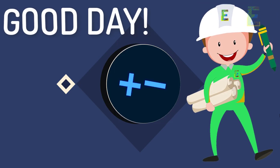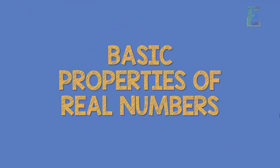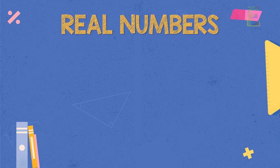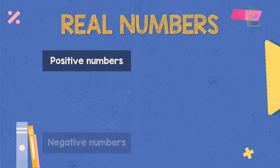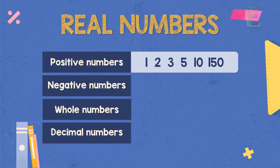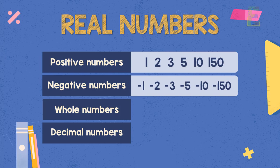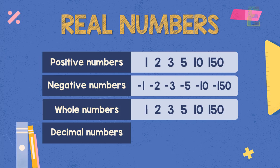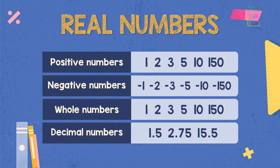Good day learners, this is EarthPen. For today's topic, we are going to talk about the basic properties of real numbers. In mathematics, real numbers are the type of numbers we normally use — positive or negative numbers, whole numbers, or decimal numbers. Examples of positive numbers are 1, 2, 3, 5, 10, 150. Negative numbers include -1, -2, -3, -5, -10, -150. Whole numbers: 1, 2, 3, 5, 10, 150. Decimal numbers: 1.5, 2.75, 15.5. There are also basic properties of real numbers.